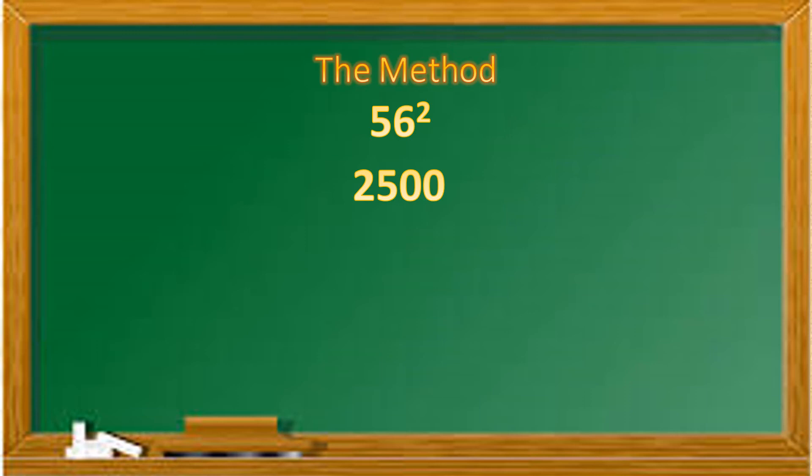To calculate the remaining two numbers, we need to find the alpha of 56. As explained before, the alpha of 56 will be 6. This 6 will give us the other two numbers.